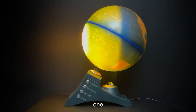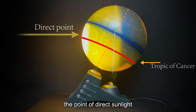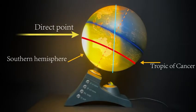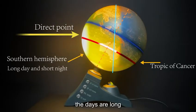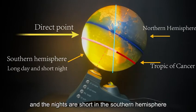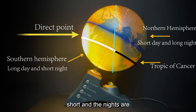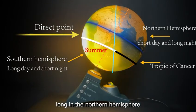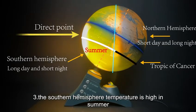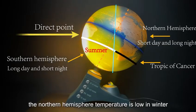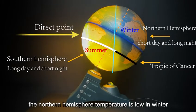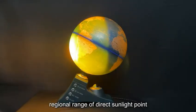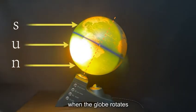Winter Solstice: The point of direct sunlight shines on the Tropic of Capricorn. The days are long and the nights are short in the southern hemisphere, while the days are short and the nights are long in the northern hemisphere. The southern hemisphere temperature is high in summer, and the northern hemisphere temperature is low in winter.